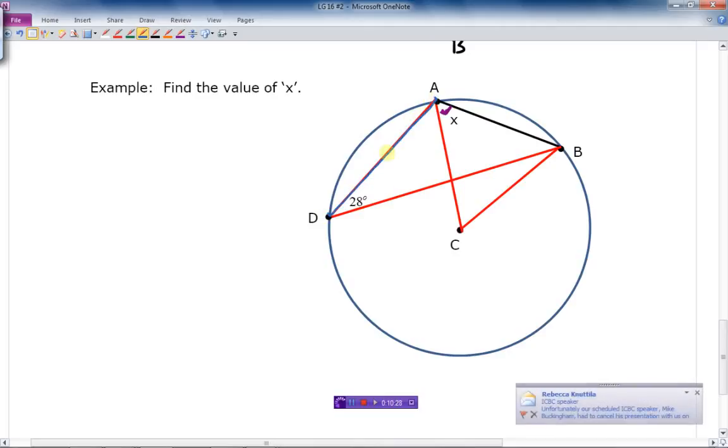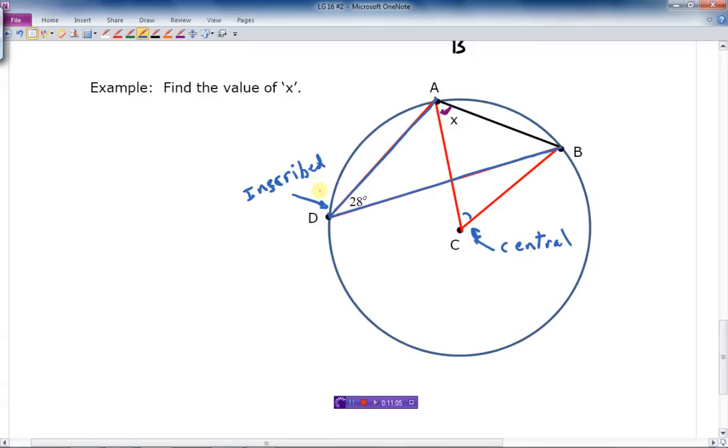It starts and ends at A and B. And so does the other central angle. This is the central angle. This one here is the central angle. And this one here is an inscribed angle. And they both started and ended A and B, started A and ended B. So what do you know about that? We know that a central angle is twice as big as the inscribed angle. So this angle must be 56. So 2 times 28 degrees equals 56.